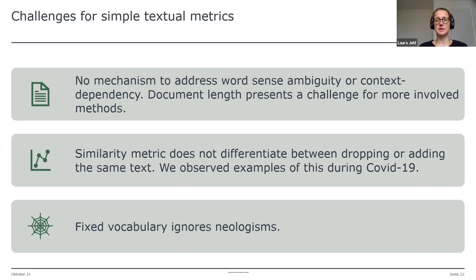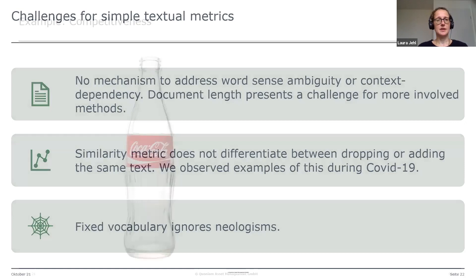However, we also identified some challenges with the textual metrics. First, there is no mechanism to address word-sense ambiguity or context dependency. There are more sophisticated sentiment extraction methods, but document length presents a big challenge for applying those. We also observed that the similarity metric does not differentiate between dropping or adding the same text — during the COVID pandemic, some firms showed a large change in similarity in July because they dropped the COVID risk factor. Finally, using a fixed vocabulary means we are currently unable to capture any new neologisms.